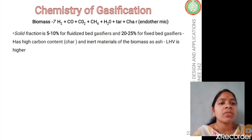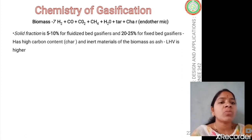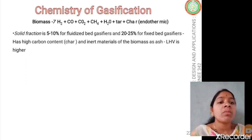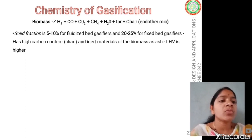The percentage of solid fractions from pyrolysis depends on the gasifier type. For fluidized bed gasifiers, the solid fraction is about 5 to 10%, because the biomass consists of smaller suspended particles that are combusted and gasified. Therefore the solid fraction is very low. Fixed bed gasifiers produce higher char content — a high-carbon solid along with inert materials like ash.